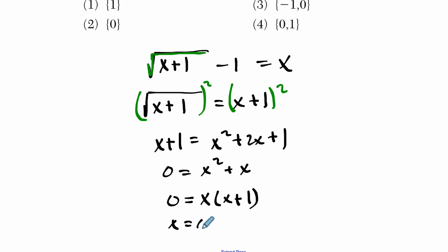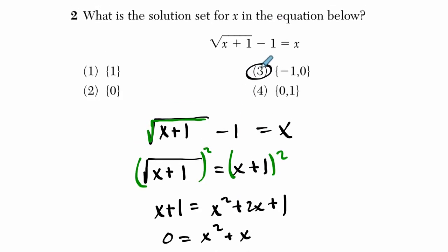Now I can solve it by saying, well, x could be 0, or x plus 1 could be 0, in which case x is negative 1. So the two x values that would satisfy this are 0 and negative 1, which is choice 3.